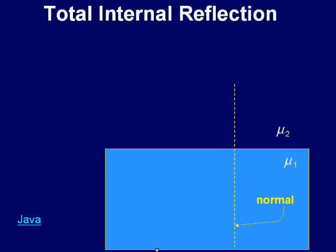Consider two mediums of refractive indices μ₁ and μ₂, μ₁ being optically denser than μ₂. The normal is shown in the figure.